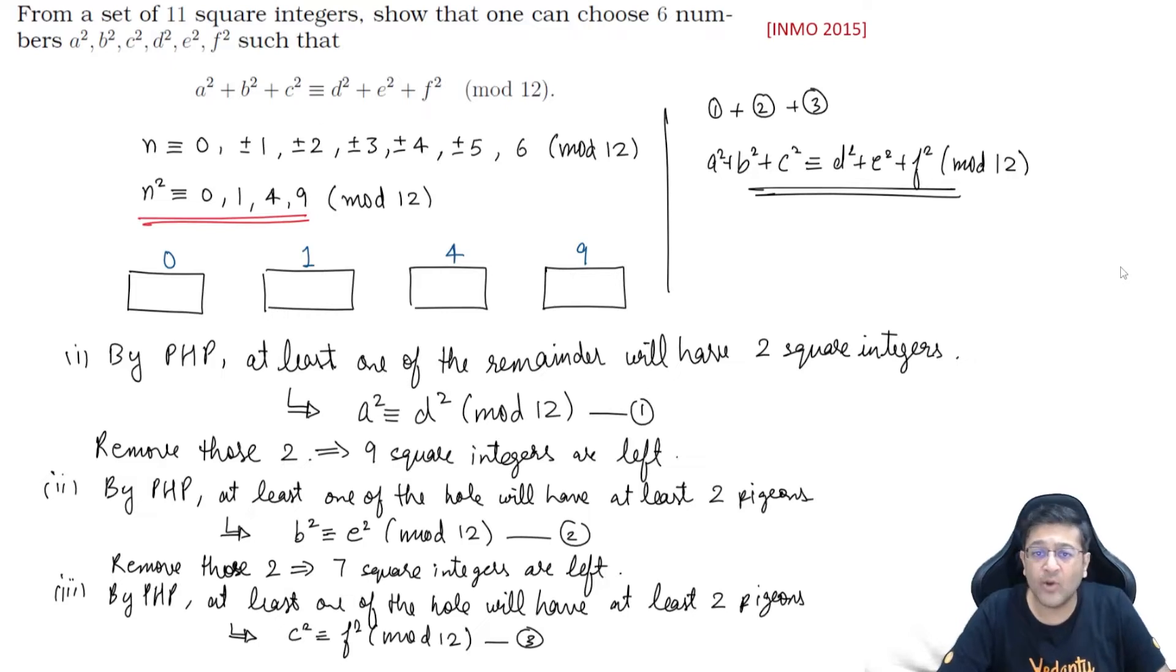It's quite easy using pigeonhole principle. Do keep in mind, if you would have 9 integers as well instead of 11, after the first time you would get 7, then 5, and from 5 also 2 would come in the same remainder, so even then this would have been true. So I hope you understand this application of pigeonhole principle here, quite straightforward and basic.